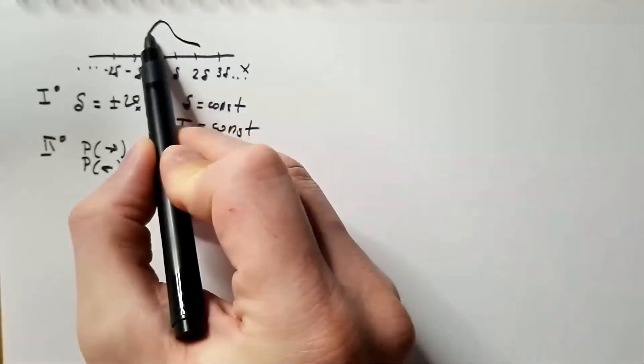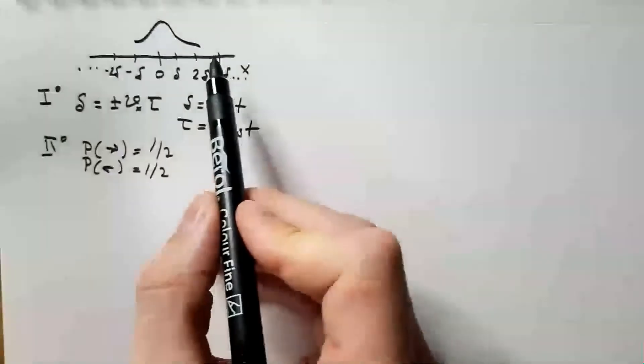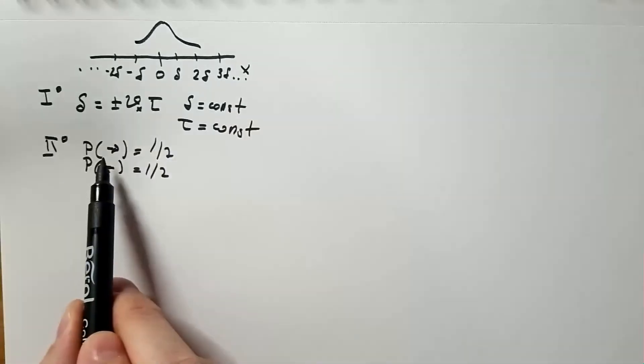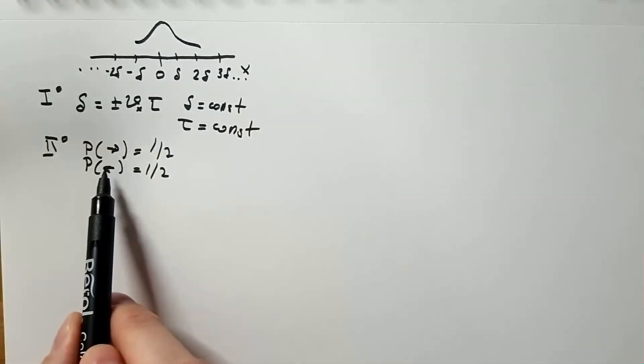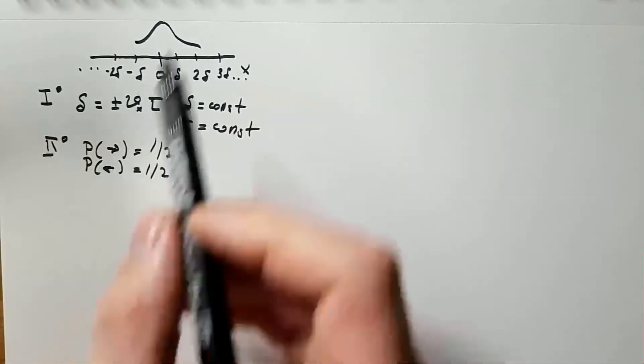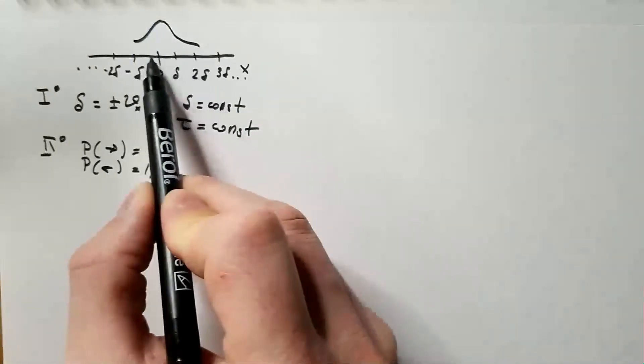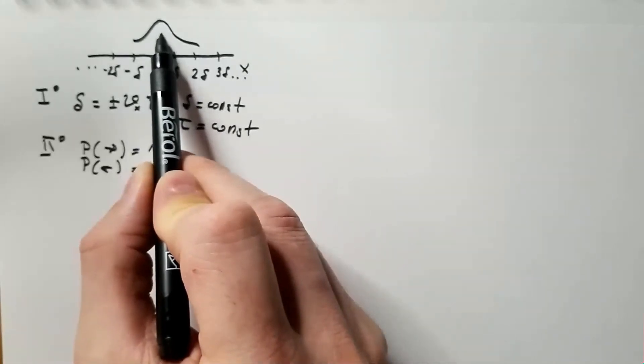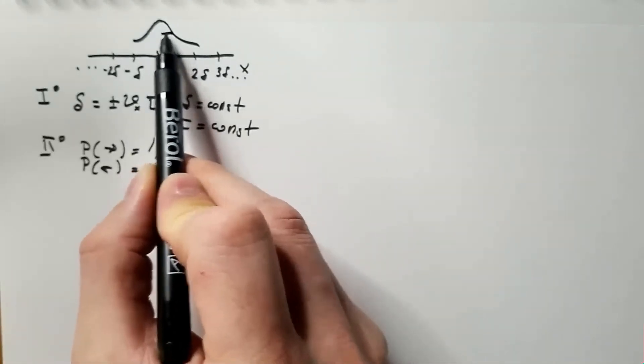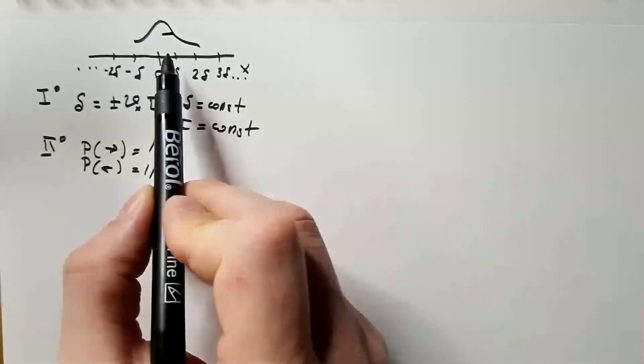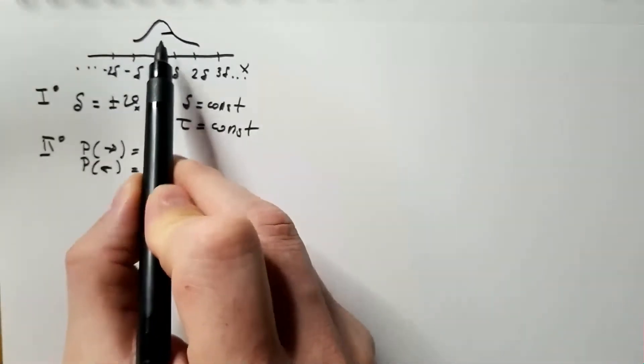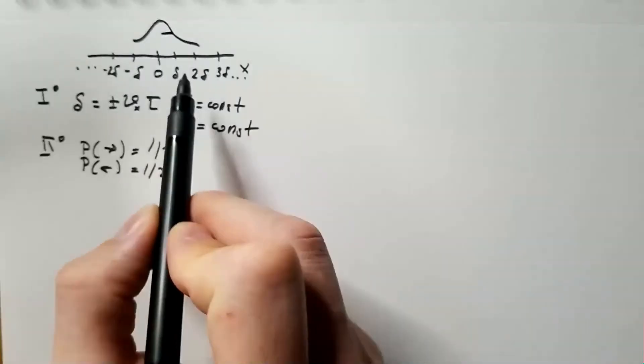Which means that after some long time, the position of the particle can be represented using normal distribution. Which would be like this. And the normal distribution would have mean zero. Because the likelihood to go right is equal to the likelihood to go left. Which means, on average, particle wouldn't go anywhere. But, the spread of this normal distribution will tell us what is the average spread, or the average roaming distance of this particle.